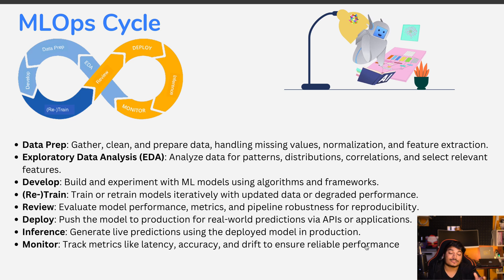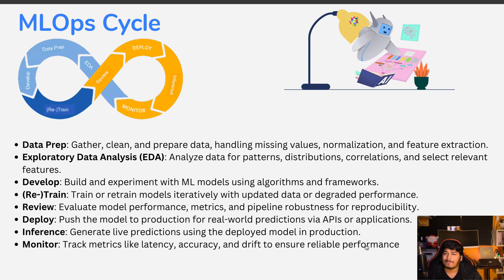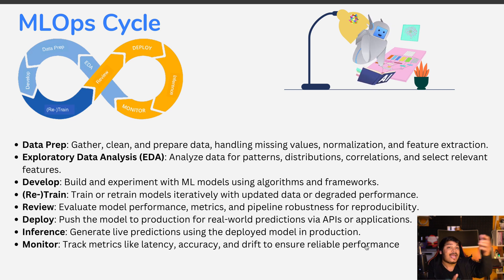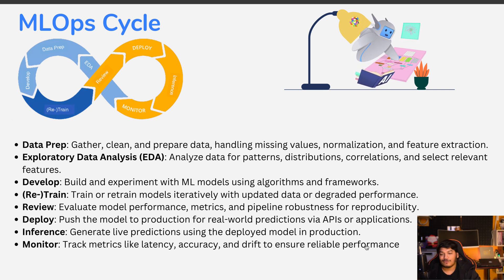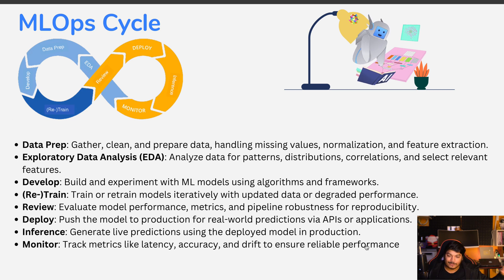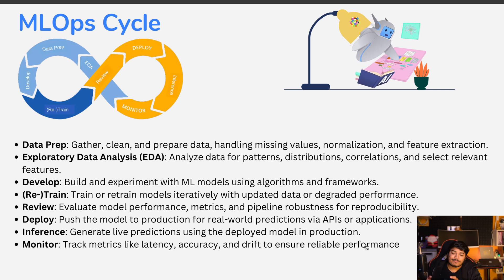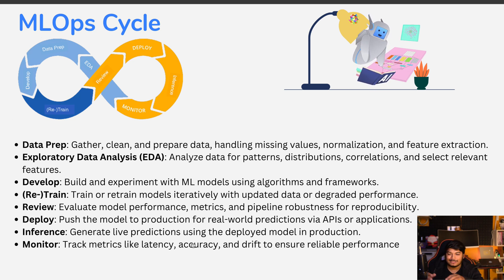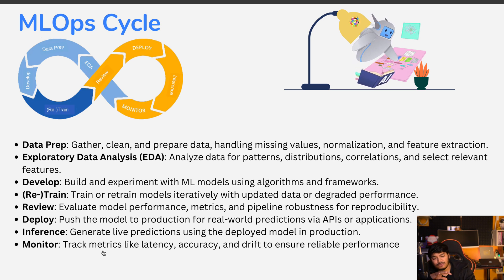The deployment phase involves pushing the model to production for real-world predictions via APIs or applications — it could be a Django app, a Node.js app, or any programming language used to serve the model. You take input from user events, make predictions, and return results. Then there's inference — generating live predictions using the deployed model — and finally monitoring for latency, accuracy, and drift detection.